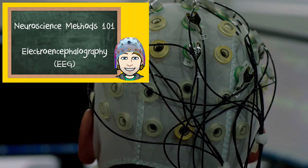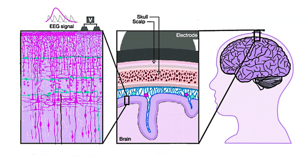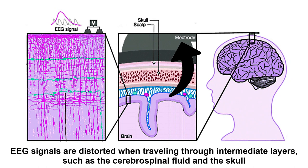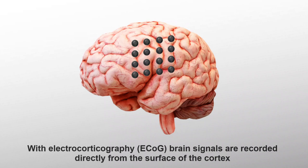As a quick reminder, EEG is a non-invasive procedure where tiny electrical signals are recorded from the head. These electrical signals originate from large groups of neurons and the signals travel all the way through the skull. EEG signals are very weak and they are heavily distorted by the skull. You would get a much better and precise signal if these electrodes were not placed on the head, but directly on the brain.